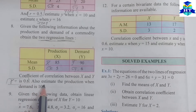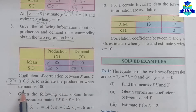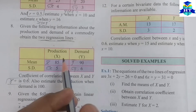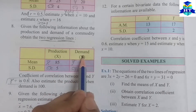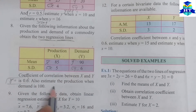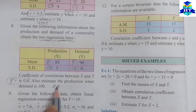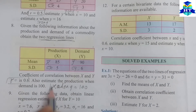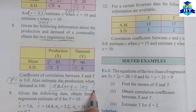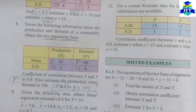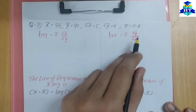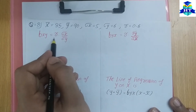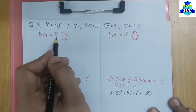We also need to estimate the production when demand is given. We have X on Y — product when demand. We have X when Y equals 100. We need to identify and find B X on Y and B Y on X.